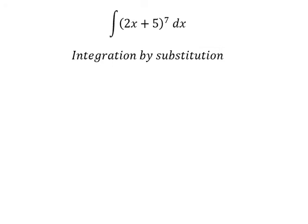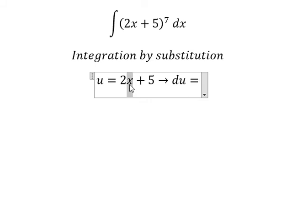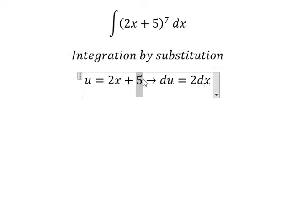I will set u equals to 2x + 5. Then we do the first derivative for both sides. First derivative of 2x is 2. The derivative of the constant 5 is zero, so we just put x.